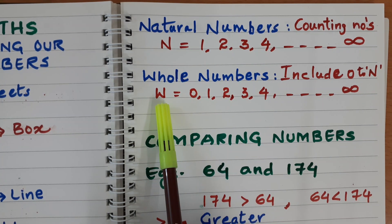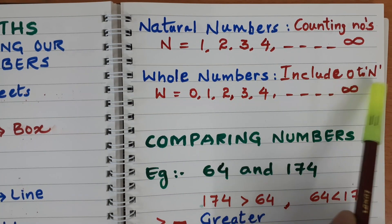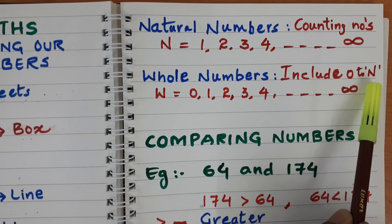It is represented by letter W. This is the definition. Include 0 to n stands for natural numbers.